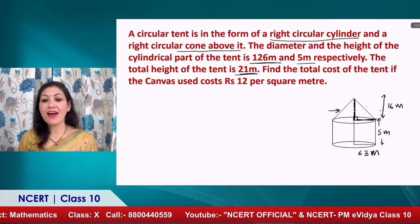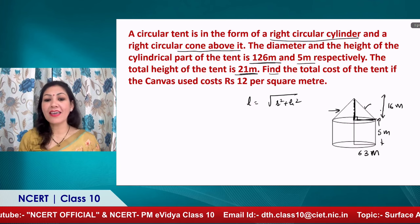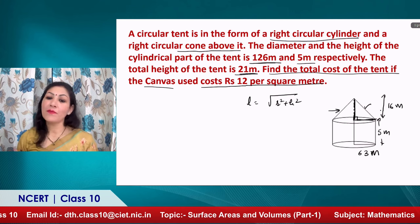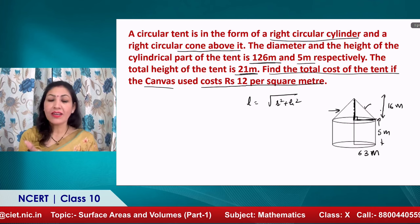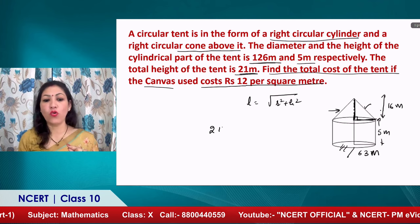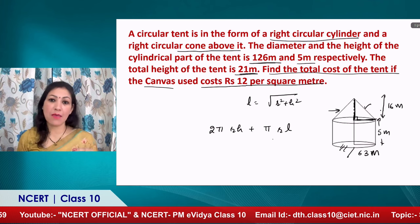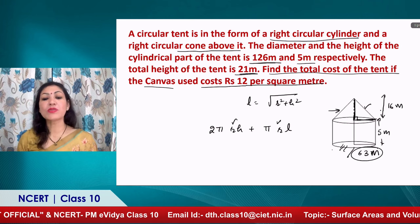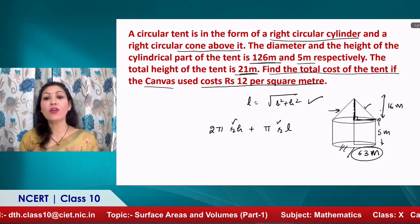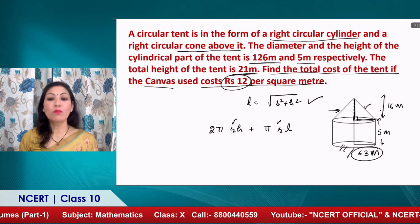For the conical tent problem: the diameter of the cylindrical portion is 126 m, so radius = 63 m; height of cylindrical portion = 5 m; total tent height = 21 m, so height of conical portion = 21 - 5 = 16 m. Slant height of cone = √(r² + h²). Since the tent has no floor, we calculate the curved surface area of the cylindrical portion plus the curved surface area of the conical portion, then multiply by ₹12 per m² to get the total cost.